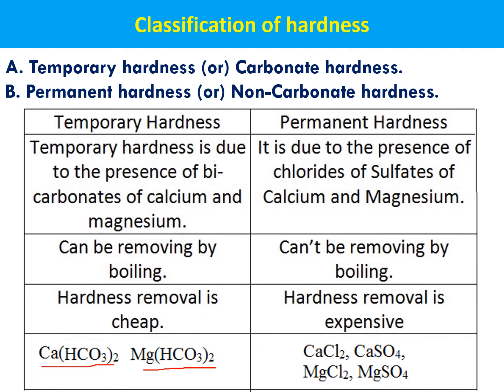Permanent hardness means it is not easily removable — that is why it is called permanent hardness. However, it is not impossible to remove; it can be removed by some more difficult processes like chemical processes. It cannot be removed by boiling. It is caused by the chlorides and sulfates of calcium and magnesium — the remaining four salts: calcium chloride, calcium sulfate, magnesium chloride, and magnesium sulfate.